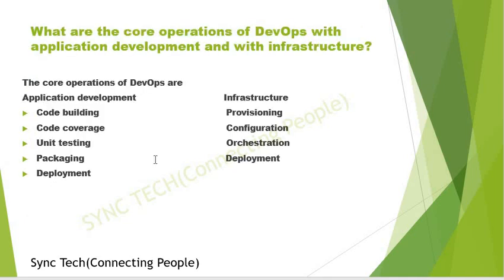The next question: what are the core operations of DevOps with application development and with infrastructure? The core operations related to application development are code building, code coverage, unit testing, packaging, and then deployment. In terms of infrastructure, we use provisioning, configuration, orchestration, and deployment.